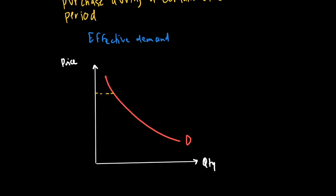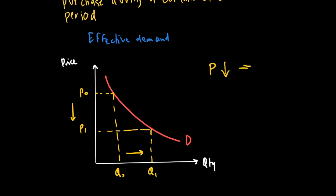If the price of a good goes down from P0 to P1, you will see the quantity demanded go up. Notice that I'm saying quantity demanded, not demand. There is a difference between demand and quantity demanded — and there's a reason why I make that distinction.